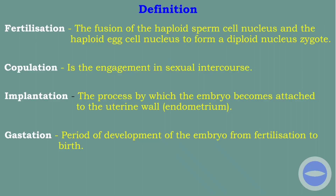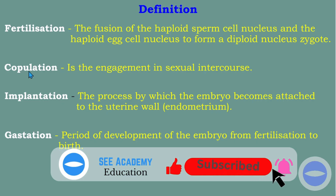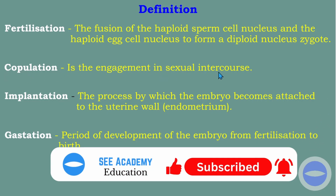Let's start with the definitions. Fertilization is the fusion of the haploid nucleus from the sperm cell and the haploid nucleus from the egg cell to form a diploid zygote. Then copulation is the engagement in sexual intercourse.